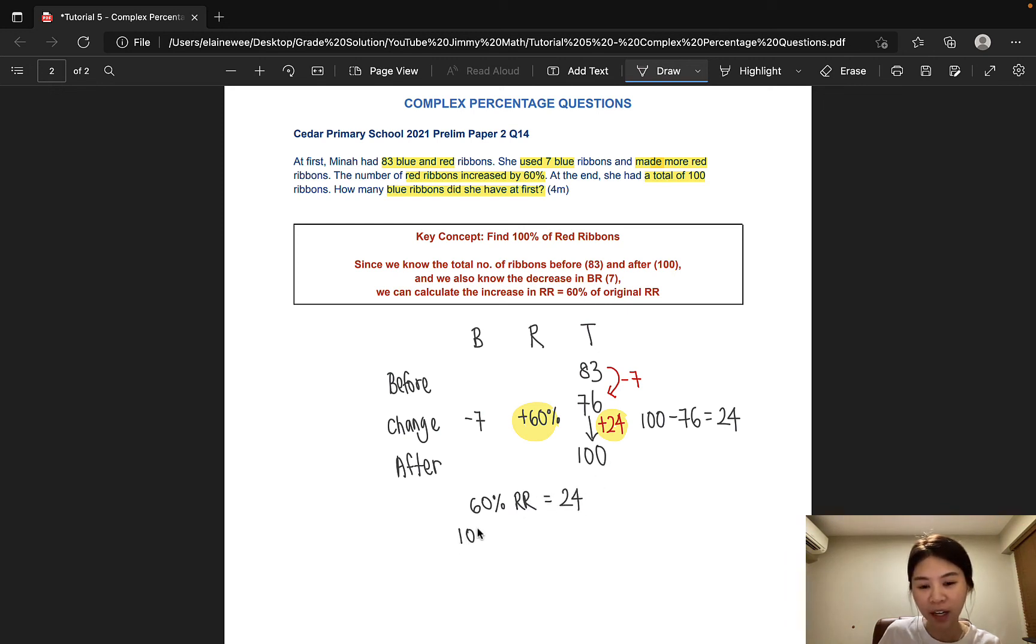From here, we can find out the total number of red ribbons. And that would be 24 over 60 times 100. And that would give us 40. So let's include this information in the BCA model.